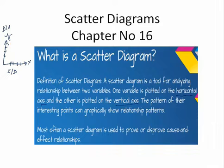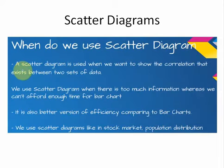So let us see what is the purpose of sketching this diagram. Scatter Diagram is used when we want to show the correlation that exists between two sets of data. Two sets of data mean two variables, one is horizontal and other is on vertical.